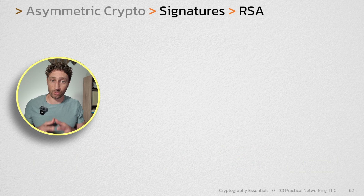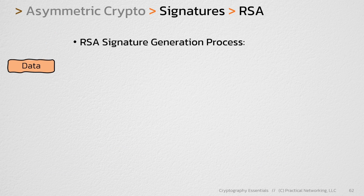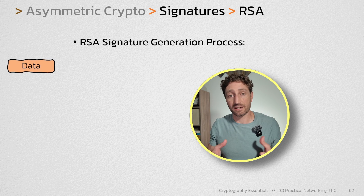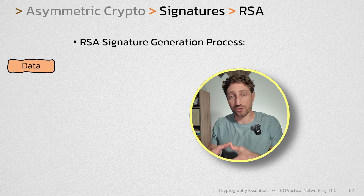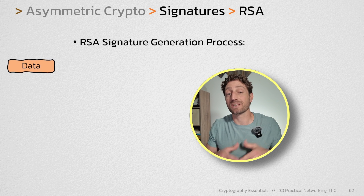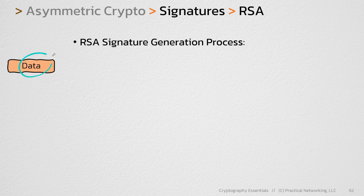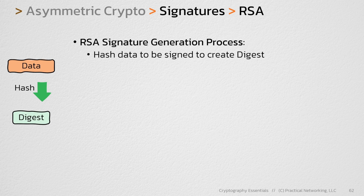Here's how the process works. It all starts with some sort of data that needs to be signed. As we mentioned in the last lesson, the data can be a bunch of different things. For the sake of this illustration, just consider this data to be some sort of set of ones and zeros. And to create a signature on this data, the first thing RSA is going to do is run that data through some sort of hashing algorithm.